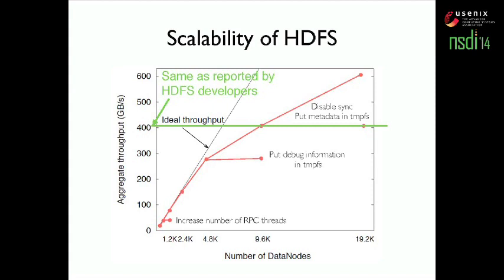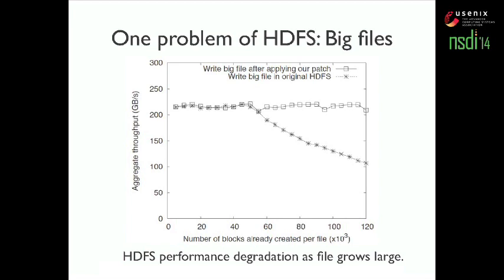Apart from configuration problems, we also find a number of implementation problems in HDFS. For example, HDFS can experience significant performance degradation as file size grows large — surprising, since HDFS is designed for big files. Profiling shows the problem is in this piece of code: when a name node adds a block to an existing file, it computes the length of all existing blocks by scanning all of them, which becomes heavier as the file grows. Our fix is straightforward — we add an integer to each file to record its existing length — and after applying the patch, HDFS no longer experiences this degradation.